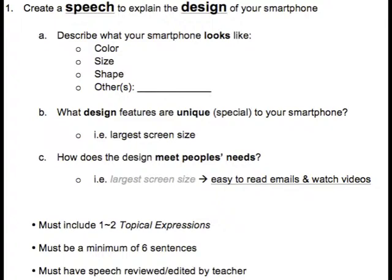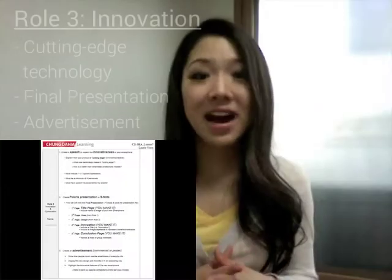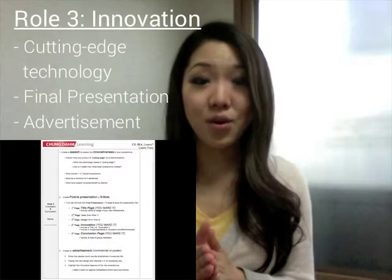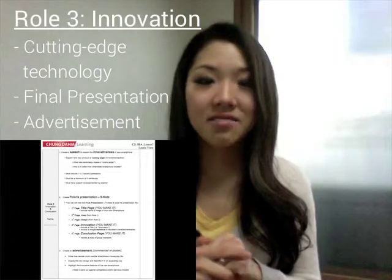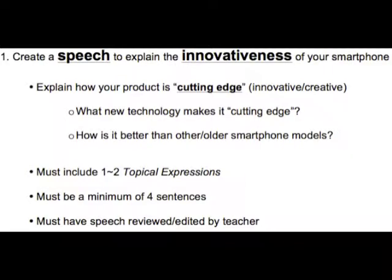For the second role, the Design role, the student must describe what their smartphone looks like — including color, size, shape, and so on. They must also give details about what design features are unique to the smartphone and how those features will meet the needs of their consumers. Finally, the third role, the Innovation role, will have the student explain what new technology makes their product cutting edge and improved from other smartphone models.